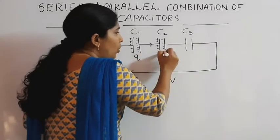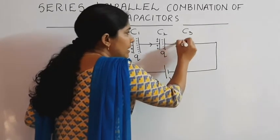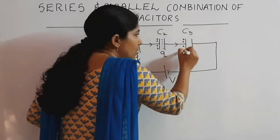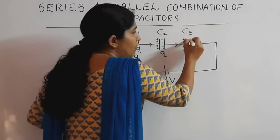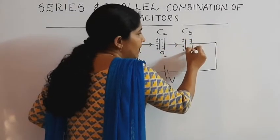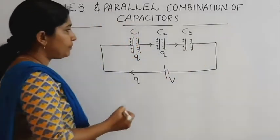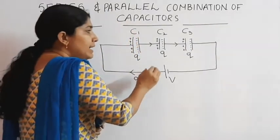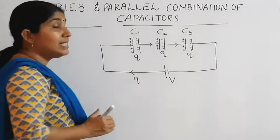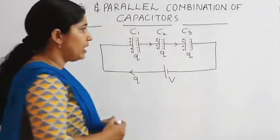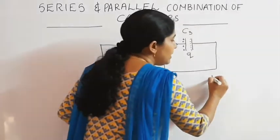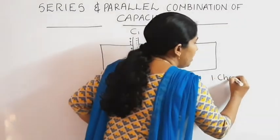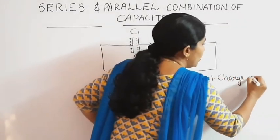The same amount of charge flows through the third capacitor as well — one plate attains positive charge and the other plate attains negative charge. So we can say that in series combination of capacitors, charge remains constant.